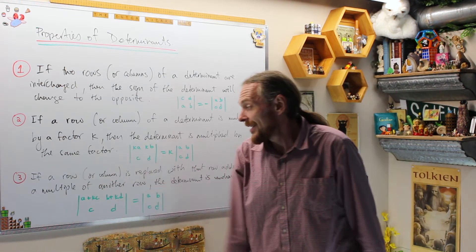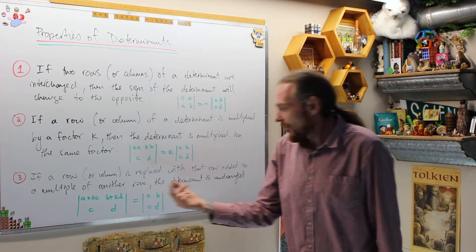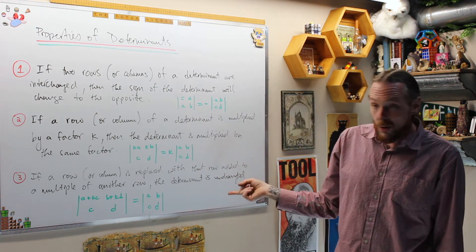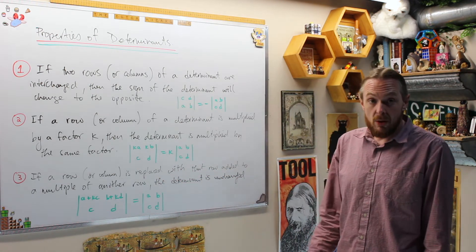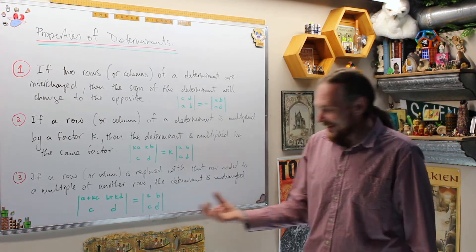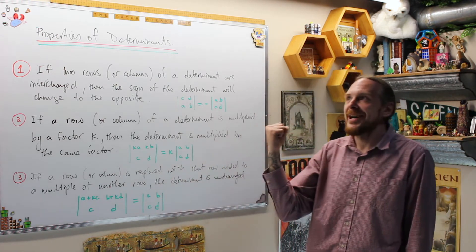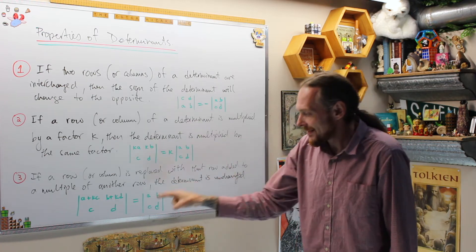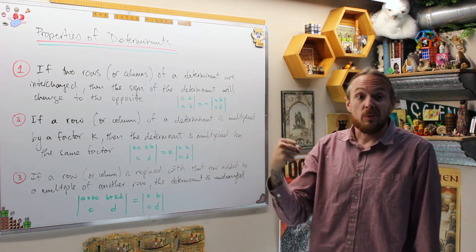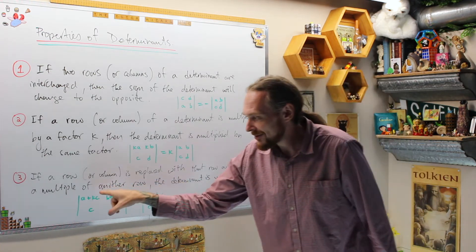Number three is if a row is replaced with that row added to a multiple of another row, the determinant doesn't change. So that's the safest one. That's the one that we're actually going to need. Finally, the universe lines up where this is the safest operation, and it's the one we need to use the most. Try to use number three.